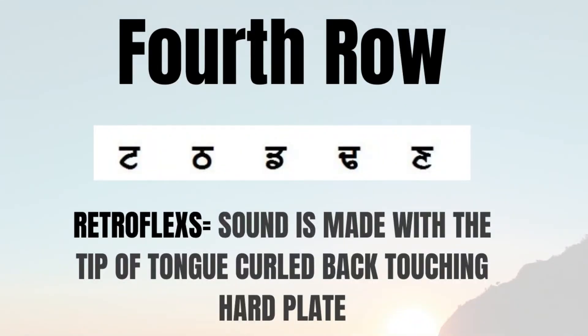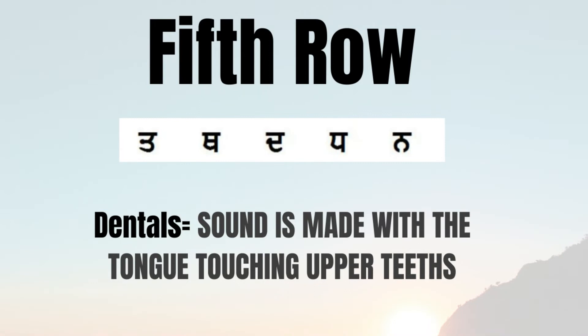The fourth row is known as the retroflex consonants because the sound is made by curling the tongue toward the back of the mouth — palatal. The fifth row is known as dentals because the sound is made by touching the tongue to the upper teeth of the mouth, and it is known as the tawad toli in the Punjabi Gurmukhi script.